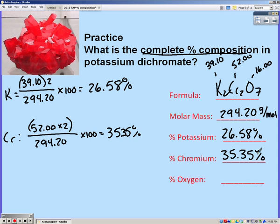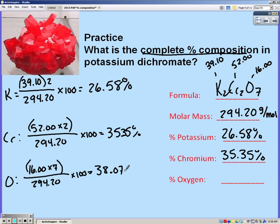And finally for oxygen, we're going to say that we have seven of them, so 16 times 7, which is 112, and on bottom should be 294.20 times 100, and you get 38.07 percent.